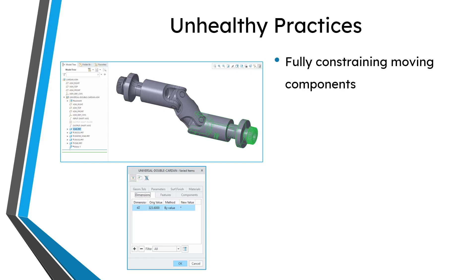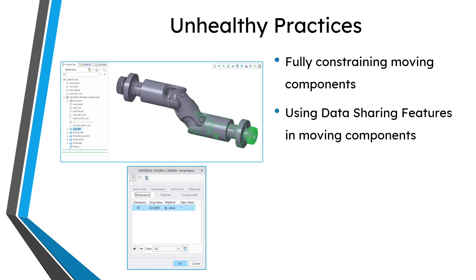Don't fully constrain components that are capable of moving. Also, if you have a component that is capable of moving, you should avoid using features like copy geometry, shrink wrap, or merge inheritance to another model if you can, because this component is moving. If you have those data sharing features, it can interfere with the geometry you want. Hopefully the part you're using will be relatively independent of any other references inside the model.